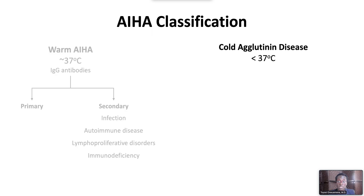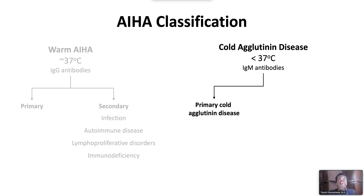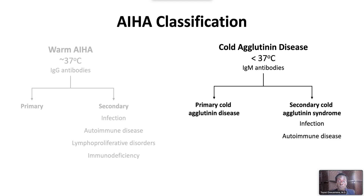Cold agglutinin disease is typically caused by pathogenic IgM antibodies directed against erythrocyte glycoprotein antigens. These antibodies typically fix and activate complement. Primary or idiopathic cold agglutinin disease occurs in the absence of an underlying disorder, while secondary cold agglutinin syndrome occurs in the setting of an underlying disorder such as a viral infection, autoimmune disorder, or lymphoid malignancy.